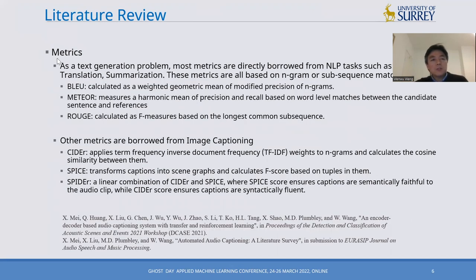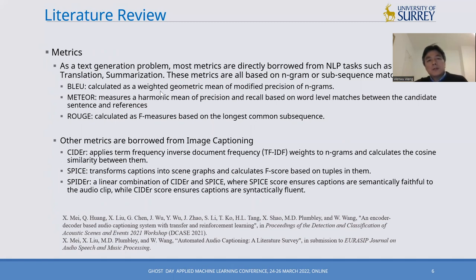The performance metrics used for evaluating audio captioning systems are largely borrowed from natural language processing and image captioning tasks. For example, BLEU is computed as a weighted geometric mean of modified precision of n-grams, where n-grams means n consecutive words. These metrics find the similarity between the generated caption and the ground truth caption by comparing n consecutive words. Other metrics include CIDER, which applies term frequency-inverse document frequency weights to n-grams and calculates the cosine similarity between them.